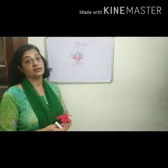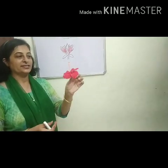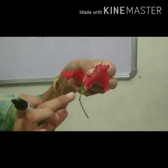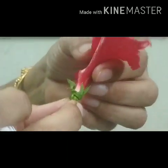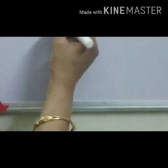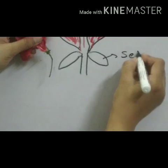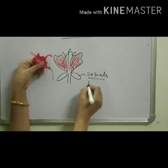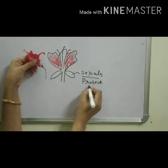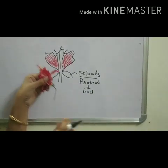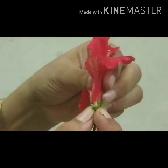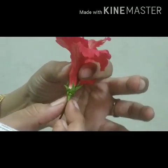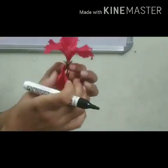Now we will see the different parts of a flower. You can see this is a colorful flower. At the base of the flower you can see the base leaves — these are the sepals. The main function of the sepals is to protect the flower in its bud stage. These green leaves also give support to the flower.